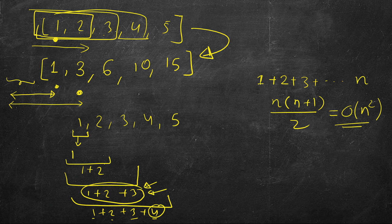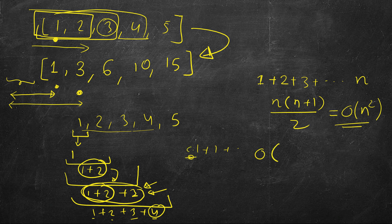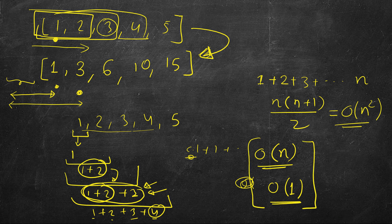For n elements, since we already calculated the previous running sum, there's no need to scan again — we use the previous value and add the current element, which is constant time. For n elements it takes O(n) total. Depending on whether you are allowed to modify the input itself, you can use O(1) additional space or create an additional result array for O(n) space.